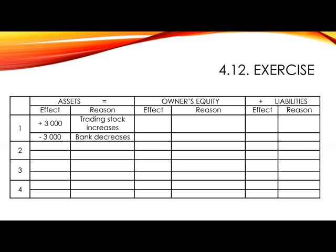Number 2: Cash sales R15,000. The stock had originally cost R10,000. In this case, you are given two different pieces of information. Although they relate to the same transaction, it is wise to separate the two amounts and handle each on its own.